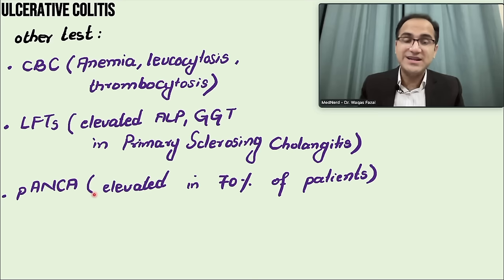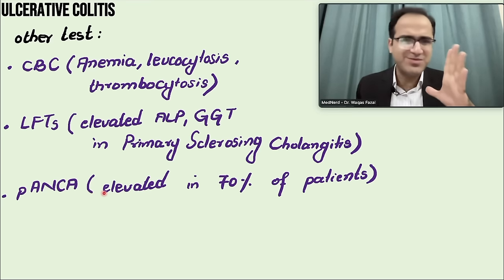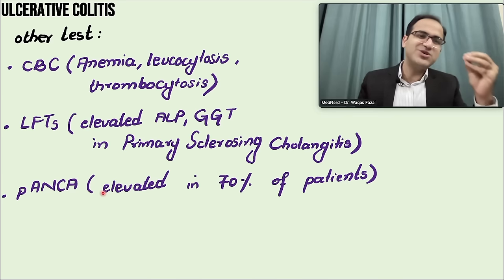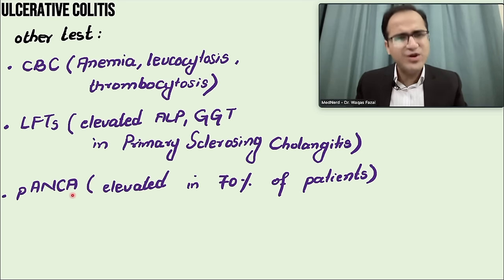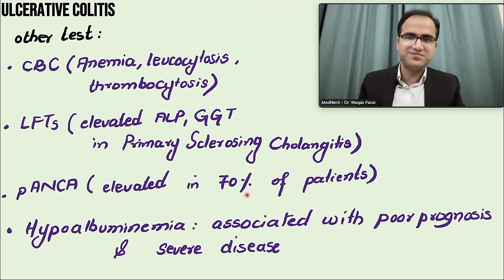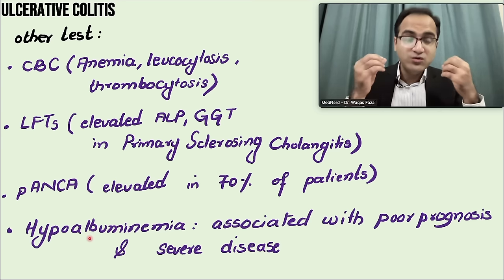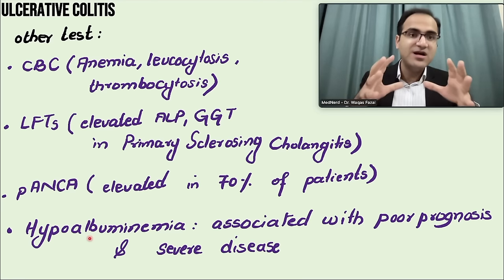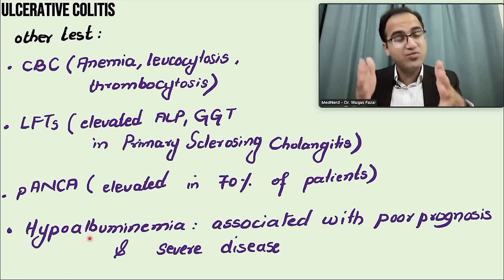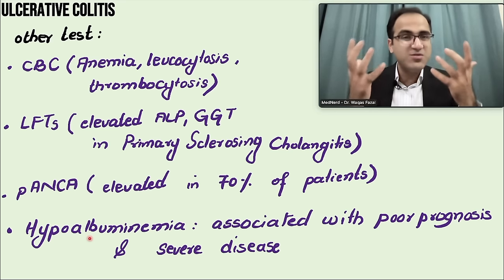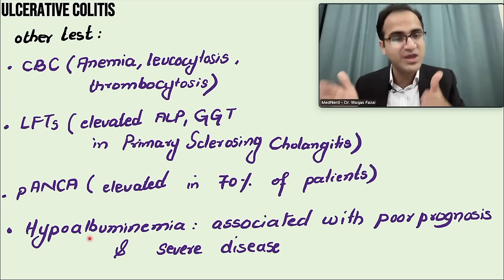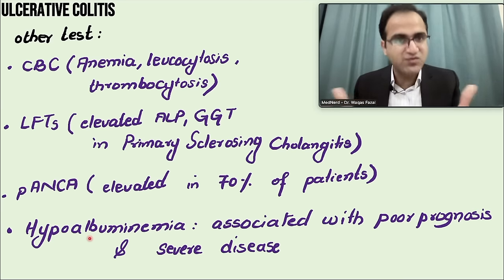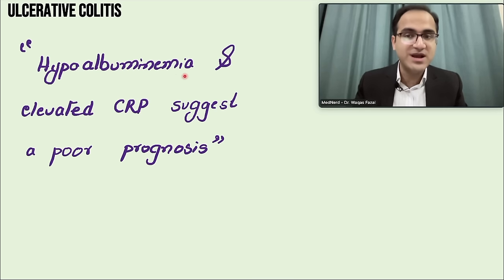P-ANCA antibodies are present in 70% of cases — must remember P-ANCA. It is the antibody that damages the intestinal epithelium after exposure of gut bacteria to the bloodstream. Hypoalbuminemia occurs because these patients lose proteins due to excessive diarrhea and gut inflammation — protein-losing enteropathy. Patients may present with facial, hand, and foot edema. Hypoalbuminemia and elevated CRP suggest poor prognosis in ulcerative colitis.